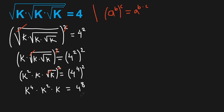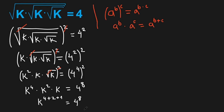We also need to know this formula: A to the power of b, times A to the power of c, equals A to the power of b plus c. Using this formula, we have k to the power of 4 plus 2 plus 1, all equals to 4 to the power of 8.